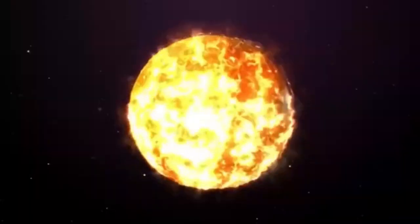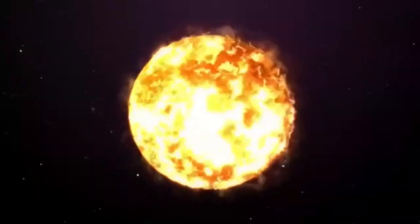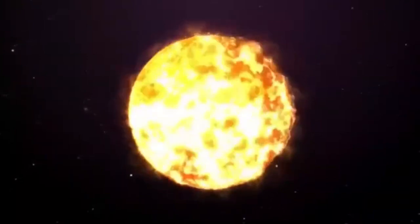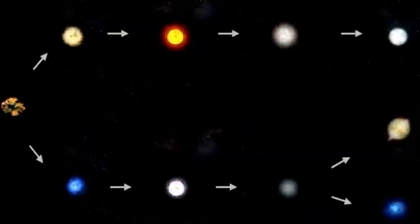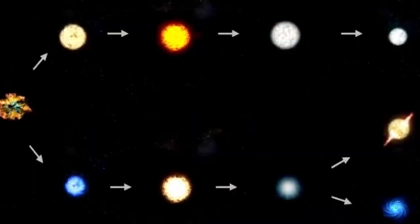The calcium in our bones, the oxygen we breathe, and the iron in our blood were all forged in the cores of massive stars like Betelgeuse and spread across the galaxy through supernova explosions.